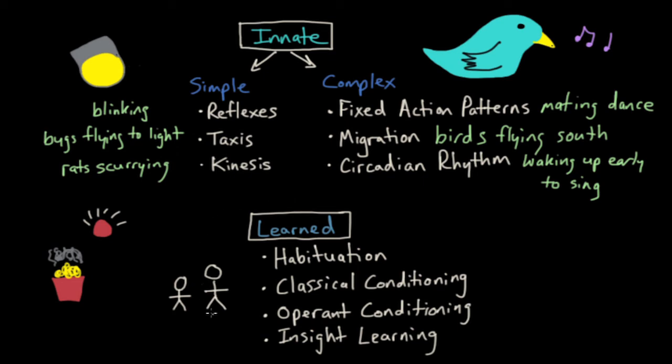And so these are the basic types of learned behaviors, and these are the basic types of innate behaviors. So to summarize, when it comes to simple innate behaviors, think of a spotlight. When it comes to complex innate behaviors, think of a bird. And finally, when it comes to learned behaviors, learn not to burn your popcorn.